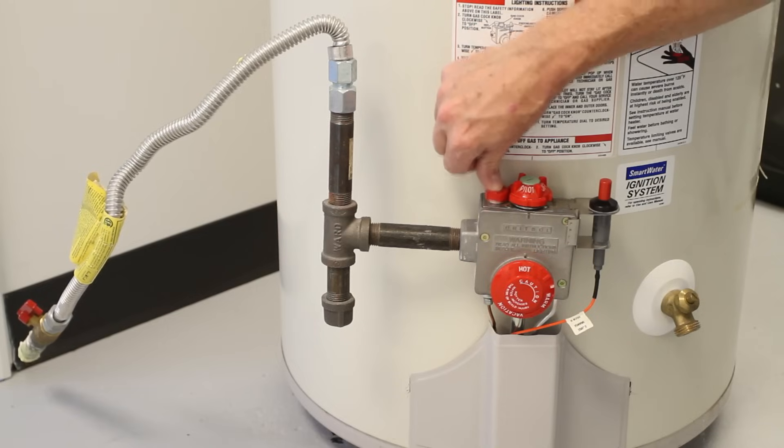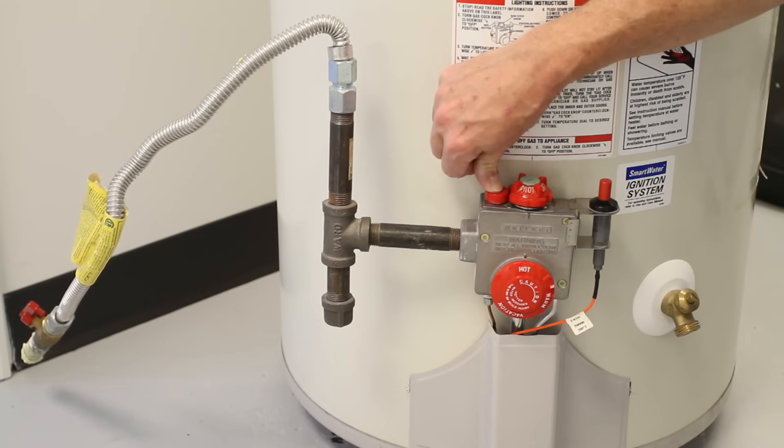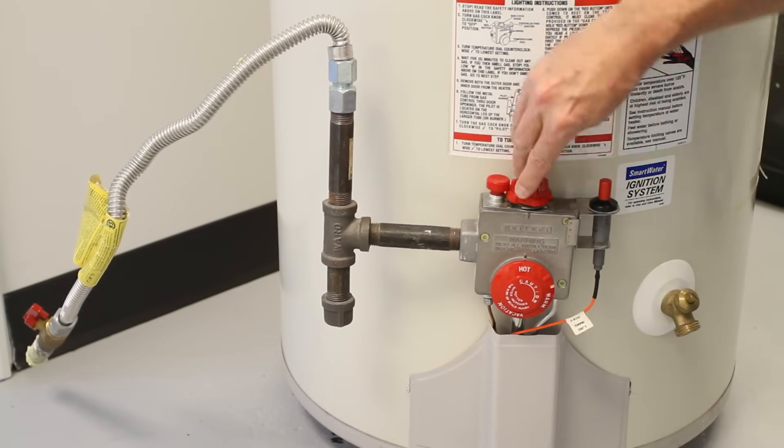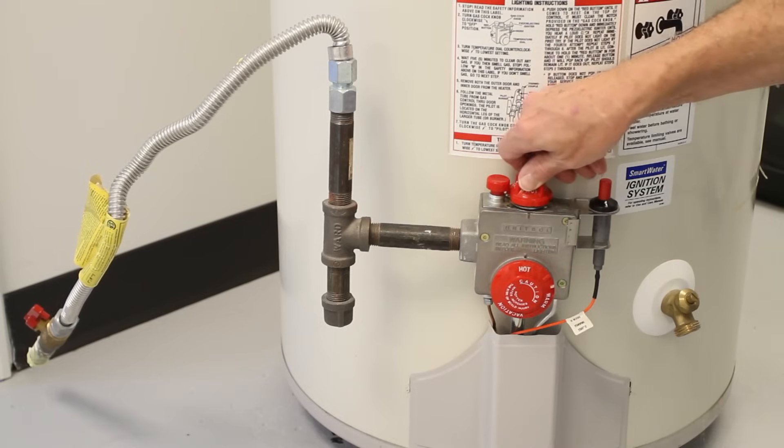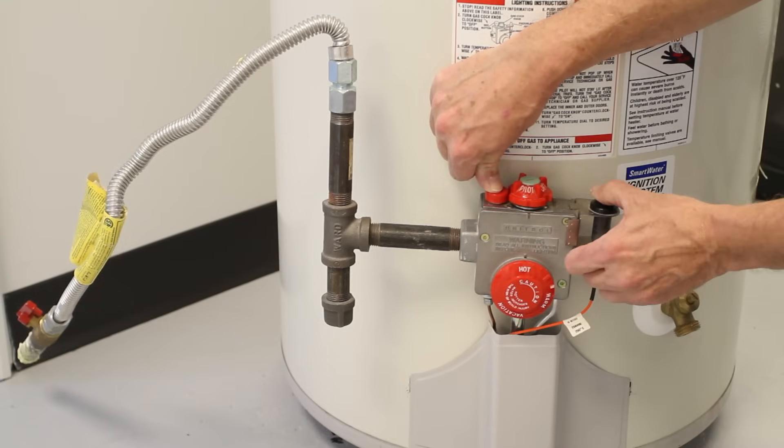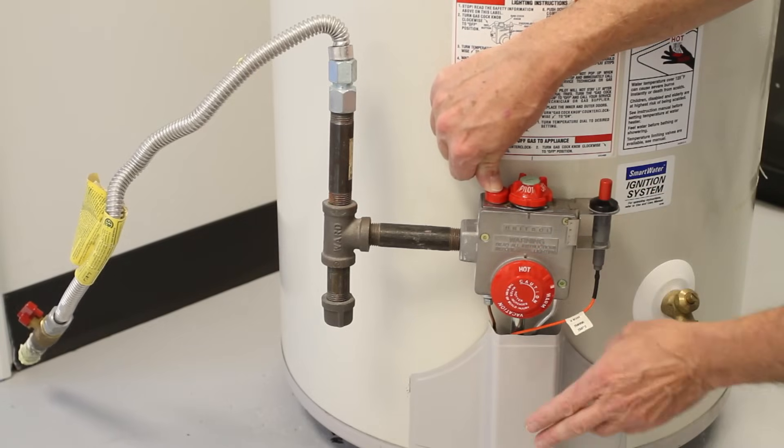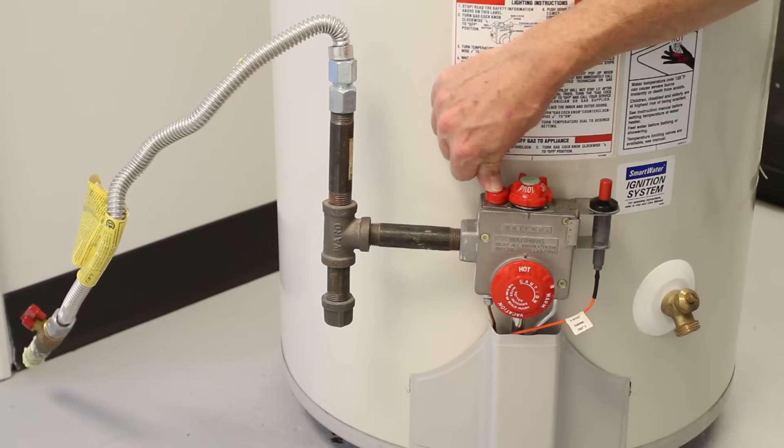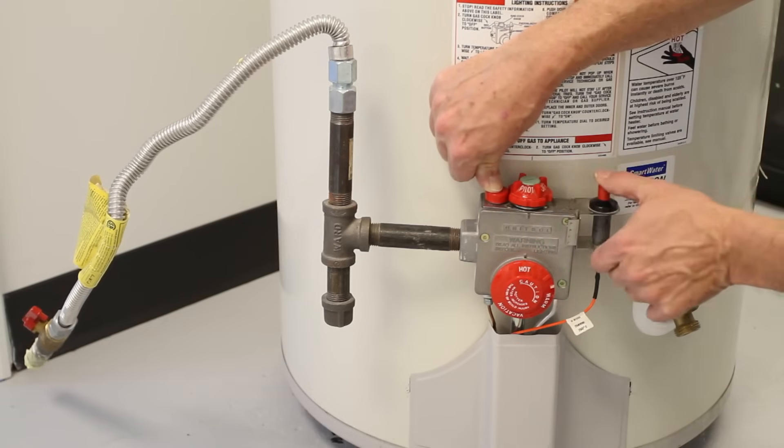You'll know it's in the right position because you'll be able to push that button down. That simply lines up with this cutout here. And the important thing is you push that button down and then spark it like that there. The days when you had to remove that cover and hold a match in there are long past. You simply hold the button down and spark it.